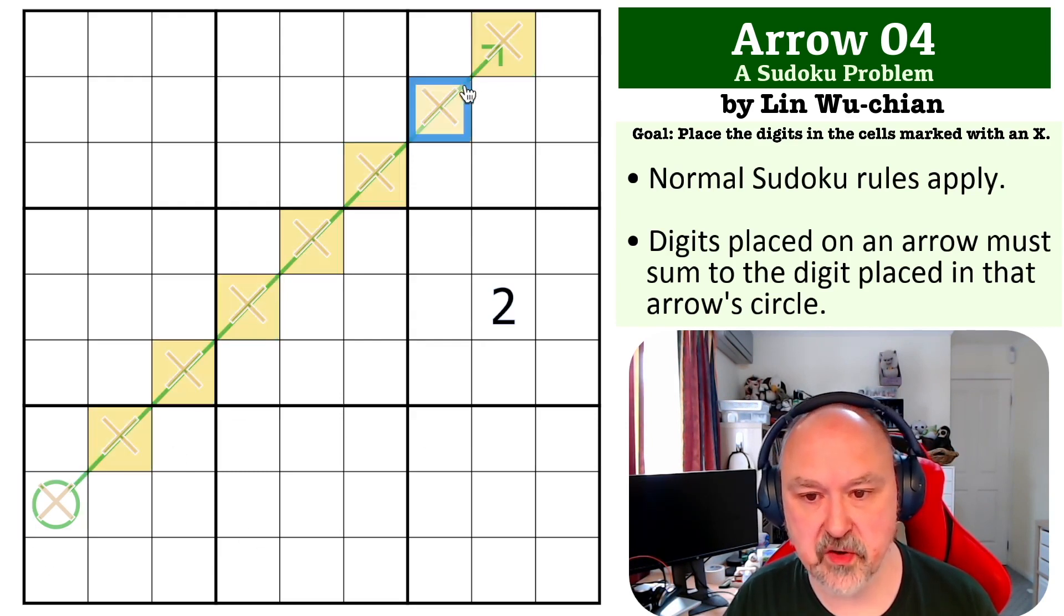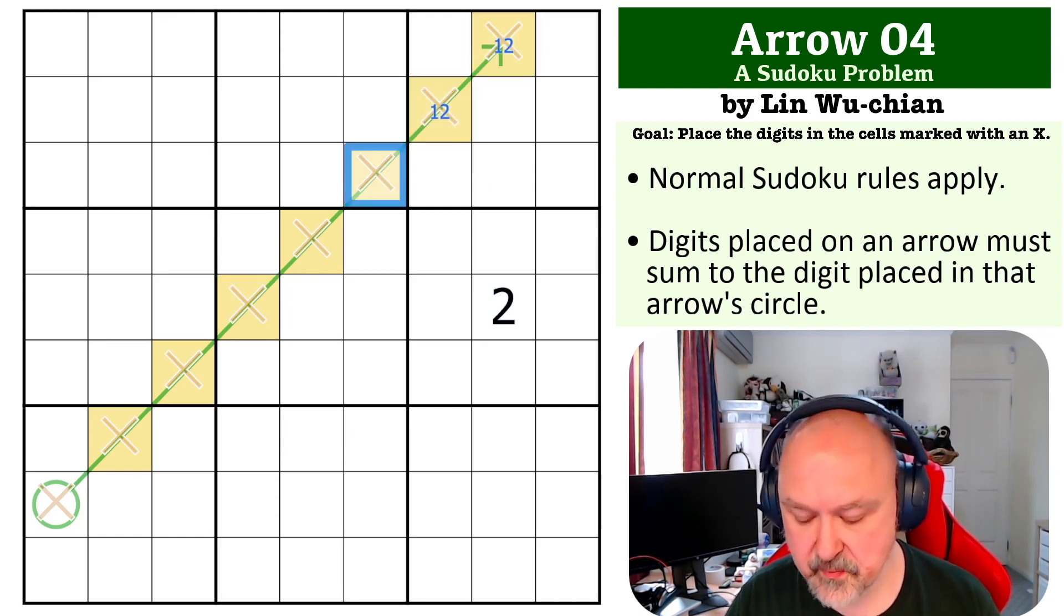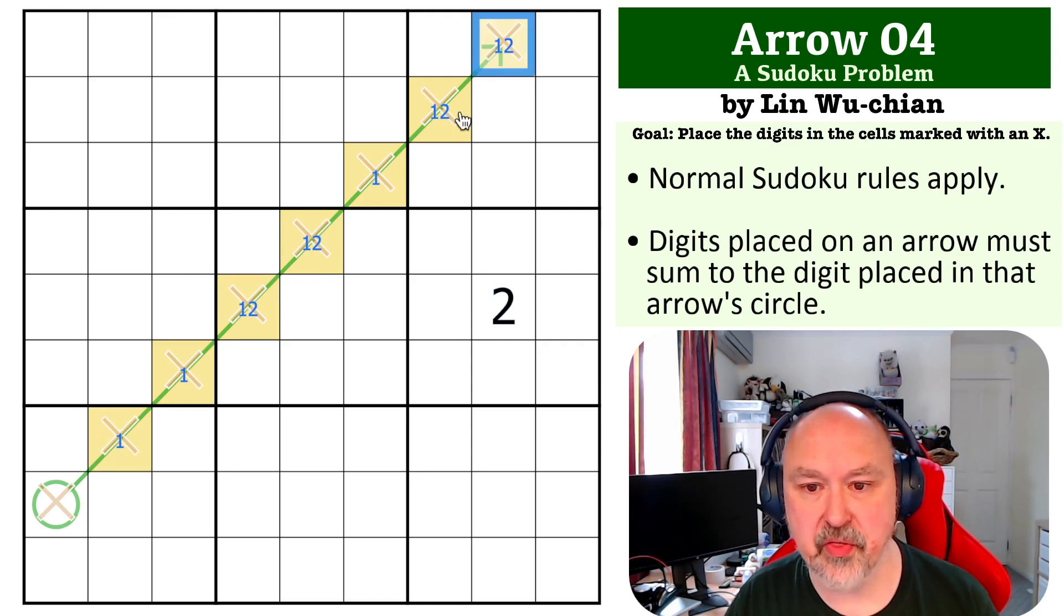So we can look at minimums of what can go into these. The minimum we can put into those is 1 and 2. The minimum we can put into here is 1. The minimum we can put into here is 1 and 2. The minimum we can put in here is 1, and the minimum we can put in here is 1. If we add all of those together,